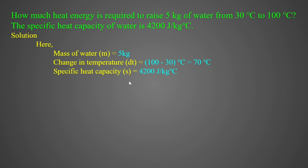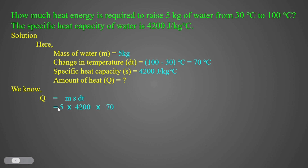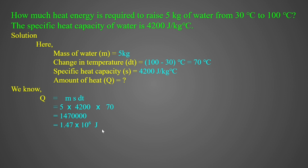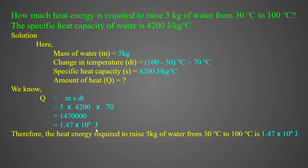Specific heat capacity s equals 4200 J/kg°C. Calculate the amount of heat Q. Q equals m times s times dT. Substituting the values: Q equals 5 times 4200 times 70. Therefore, the heat energy required to raise 5 kg of water from 30 degrees Celsius to 100 degrees Celsius is calculated.